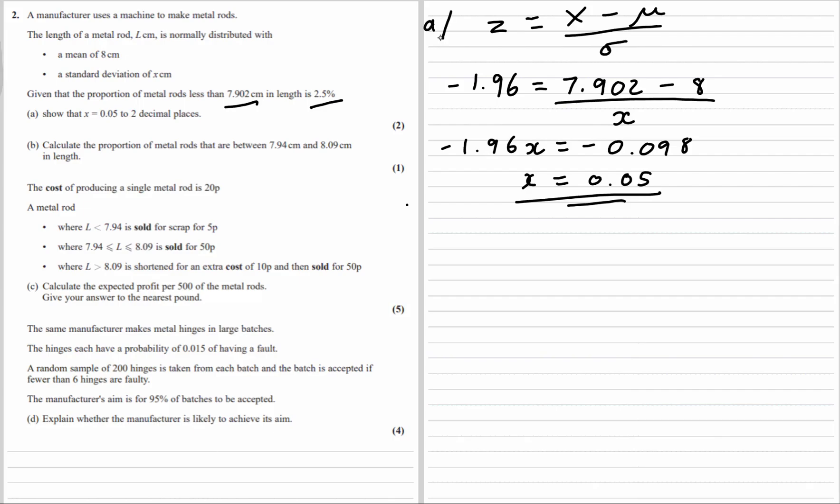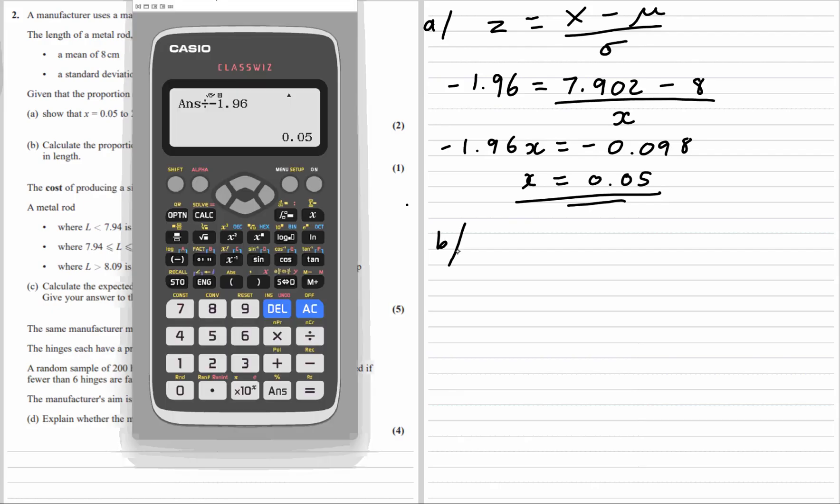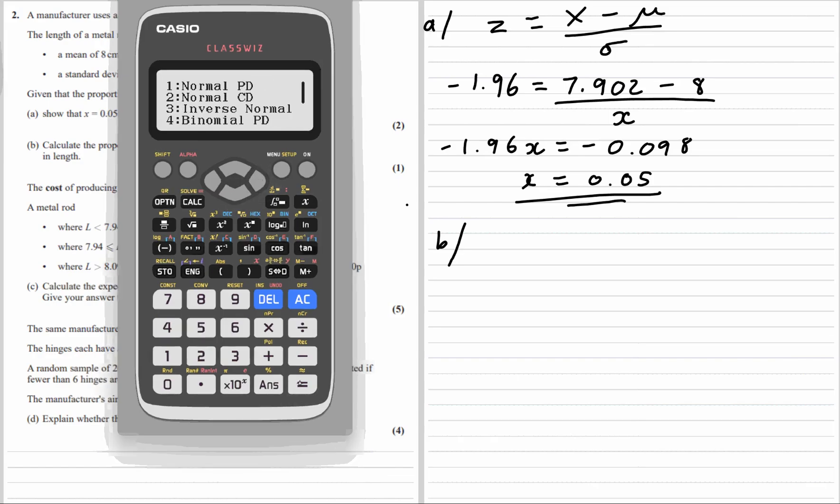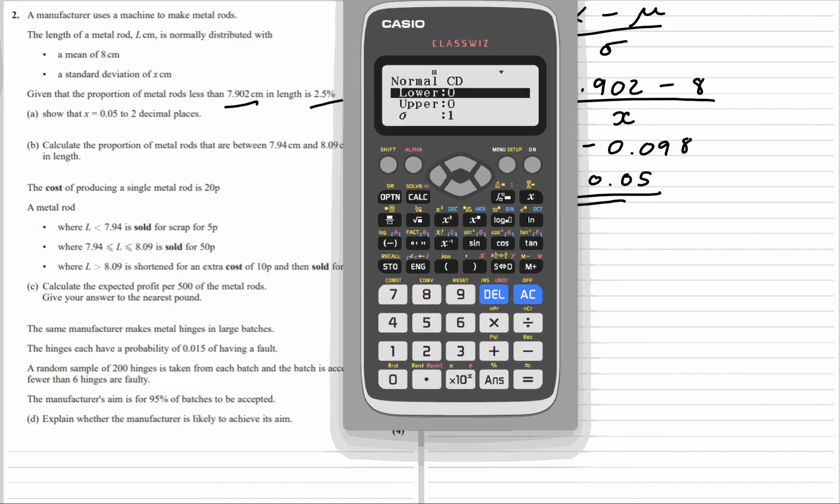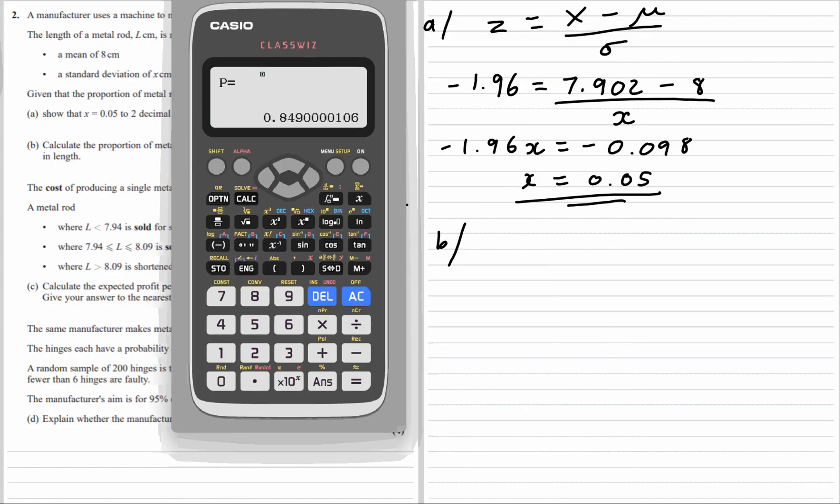Part B. Calculate the proportion of metal rods between 7.94 and 8.09. So we're just using our calculator for this. So it's a normal cumulative, and we have the lower and upper. The lower is 7.94. The upper is 8.09. The standard deviation is 0.05, and the mean is 8. We've got 0.849.